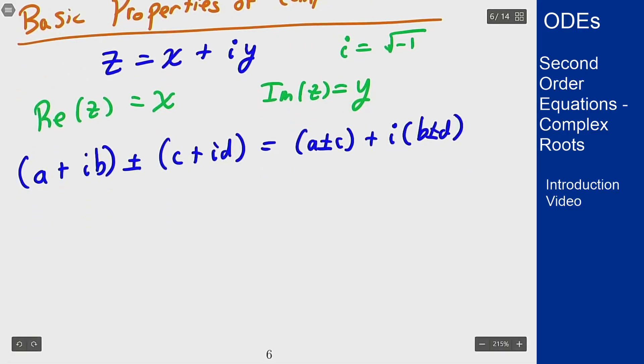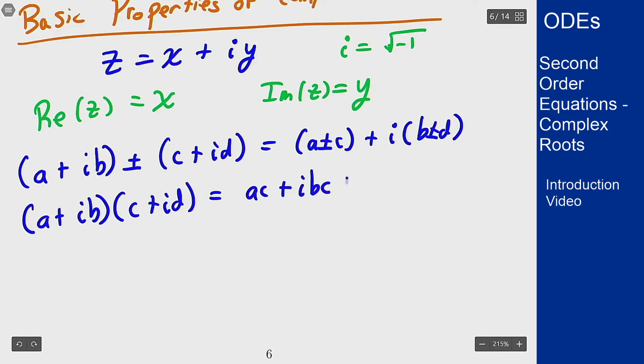Multiplying can be a little trickier. We just treat these like polynomials and FOIL things out. So (a + ib) times (c + id), we're going to get ac + iad + ibc + i²bd.